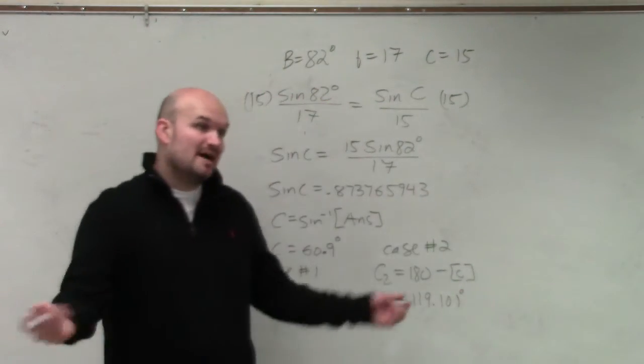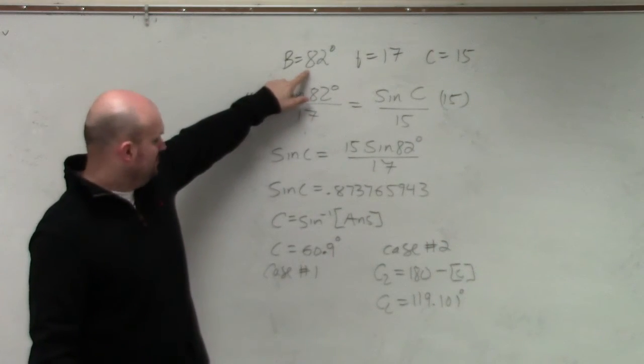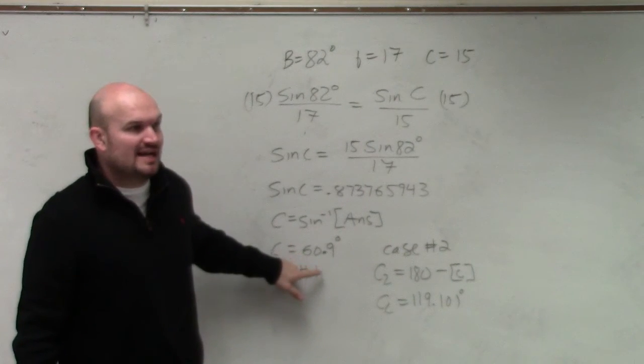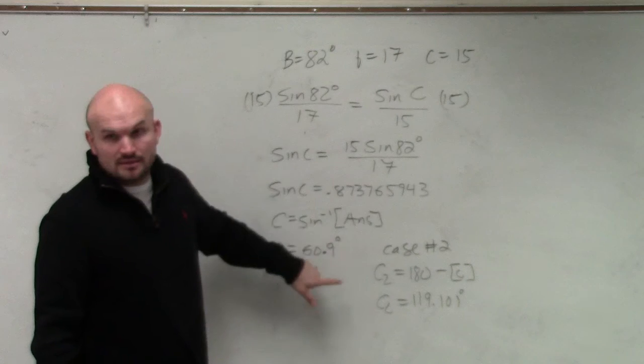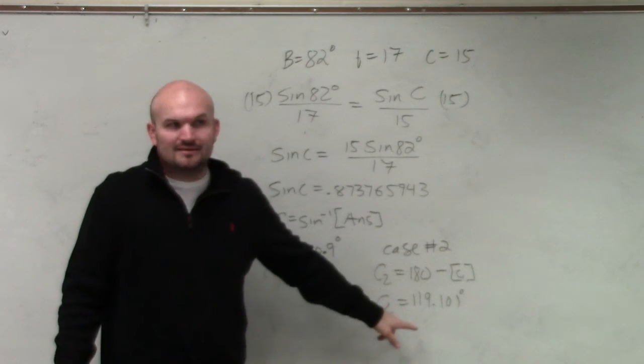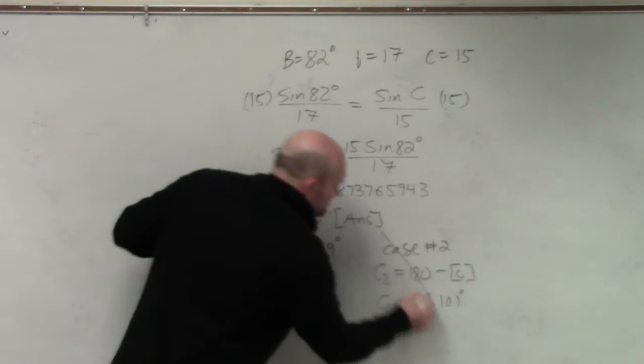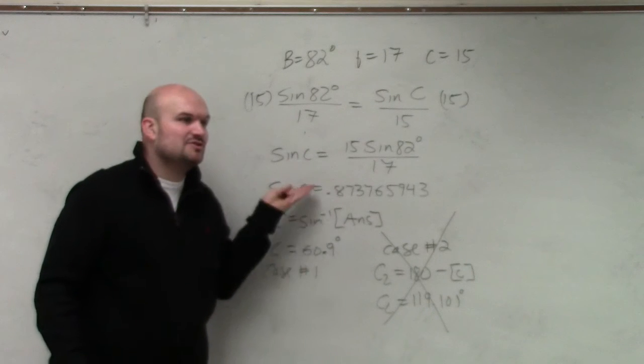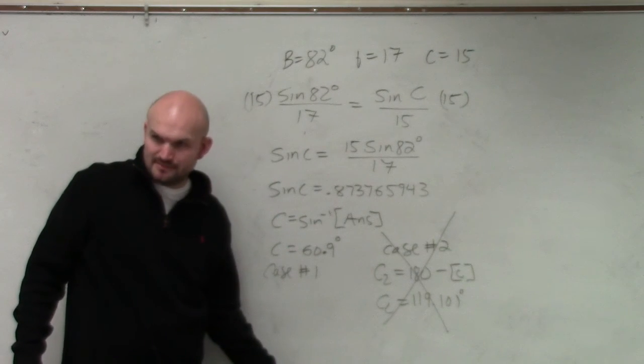So is it possible for me to have two answers for C? Well, if my original angle was 82, I could have 82 and 60 and find an angle B or an angle A, right? But is it possible for my two angles of my triangle to be 82 and 119? No, because now that's over 180. So in this problem, I only have to do the one case. I don't have to do the second case. Does that kind of make sense?